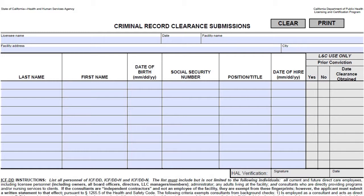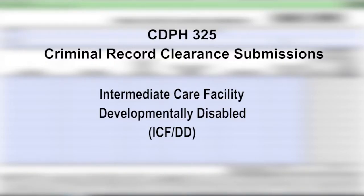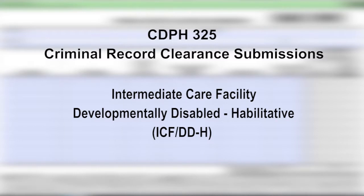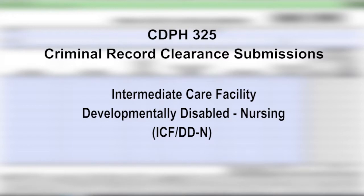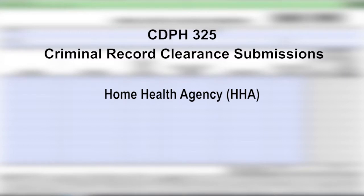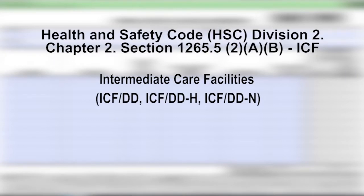This form is used to determine the background clearance of certain direct care employees, including licensee personnel for Intermediate Care Facility/Developmentally Disabled (ICF/DD), Intermediate Care Facility/Developmentally Disabled-Habilitative (ICF/DD-H), Intermediate Care Facility/Developmentally Disabled-Nursing (ICF/DD-N), and Home Health Agency (HHA).